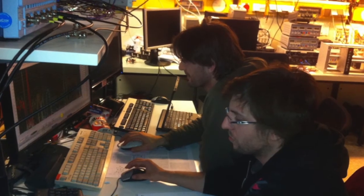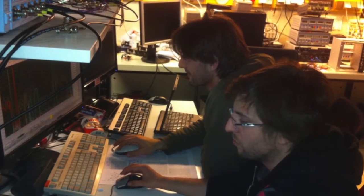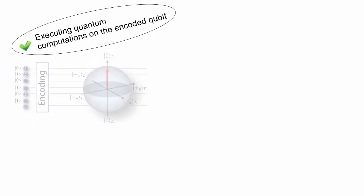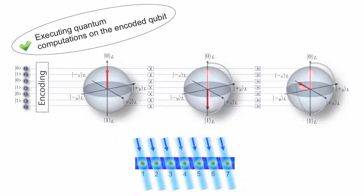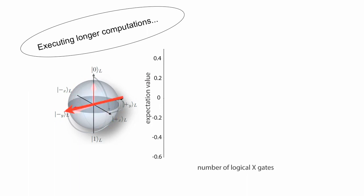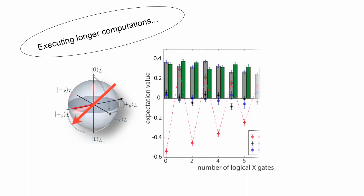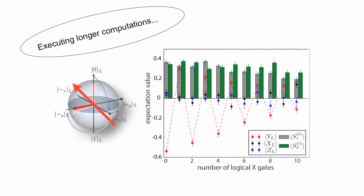We could also use the encoded logical qubit to carry out quantum computations on such encoded, protected logical qubits. First, we used sequences of laser pulses to implement the individual quantum gate operations, confirmed that these building blocks work properly and prepared a large variety of encoded quantum states. Even if we apply longer trains of quantum gates on the encoded qubit, we observe that the quantum information remains protected and does not get lost along longer quantum computations.